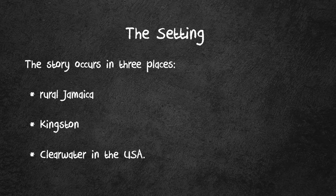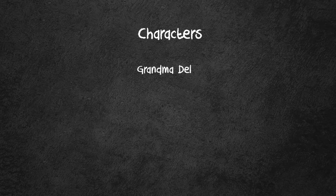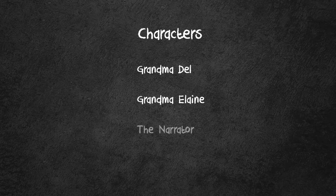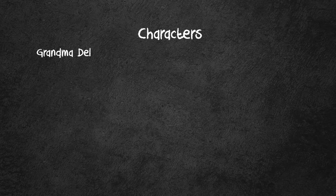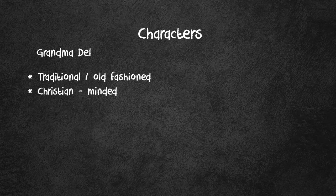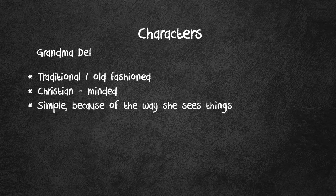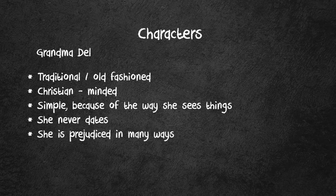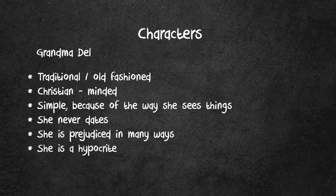We're going to start looking at characters. We have our three main characters: Grandma Del, Grandma Elaine, and the narrator. Grandma Del, as we have said earlier in the summary, is very traditional or old-fashioned. She's Christian-minded and simple in the way she sees things. She never dates. She's prejudiced in many ways, and when we look at certain aspects of the story, we may come to the conclusion that she is a hypocrite — but we're going to talk about that later.